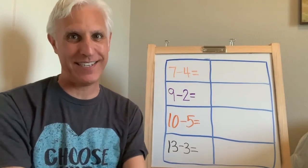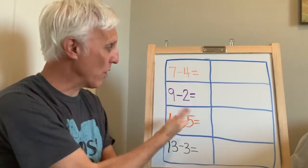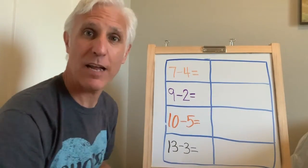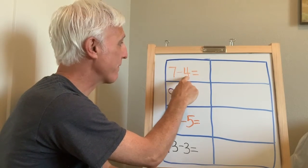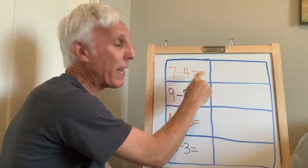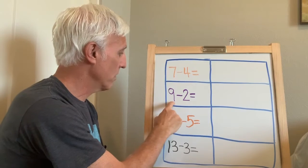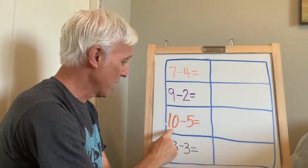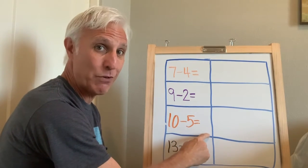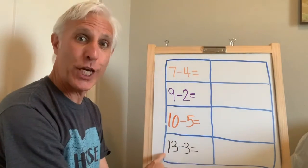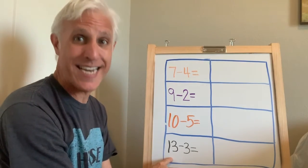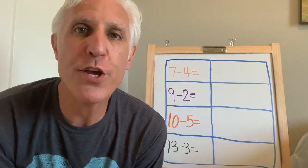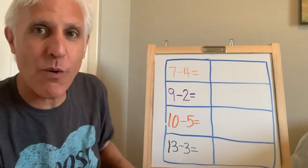Now get ready for test time! I wrote four equations and they're all minus. I'm gonna read them to you: seven minus four equals blank, nine minus two equals blank, ten minus five equals blank, and here's the tricky one at the bottom — thirteen minus three equals blank. I want you to write these equations and figure out the answers.